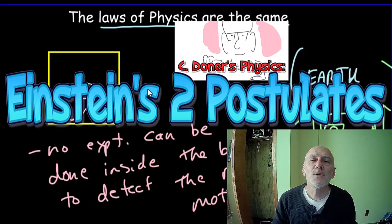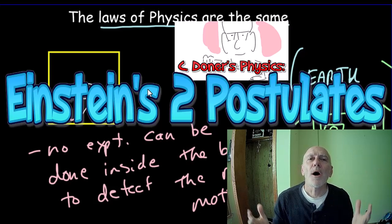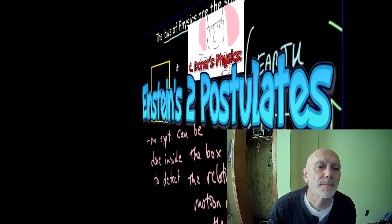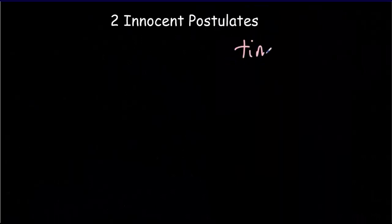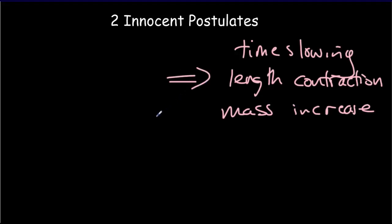Today we're going to take a look at Einstein's two postulates of the special theory of relativity. We're going to see how these two very simple, innocent-looking postulates have fantastic ramifications. There are three effects we discussed in the last video — time slowing, length contraction, and mass increase — and they're really the consequence of two very innocent-seeming postulates. In fact, one postulate is kind of a consequence of the first, so we could just have one very innocent-seeming postulate.